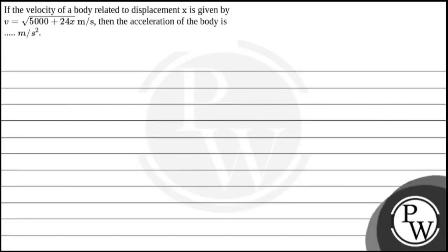Hello, let's read this question. The question says, if the velocity of a body related to displacement x is given by v equal to under root of 5000 plus 24x meter per second, then the acceleration of the body is dot dot meter per second square.